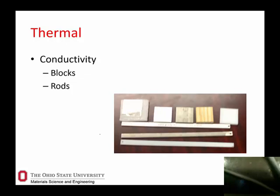Thermal conductivity is a really good one. If you've got a FLIR camera, hold one end of the sample at a given temperature and look at the temperature distribution. You can also put fingerprints on the different materials and see how long they persist with a FLIR camera, or put ice cubes on top of each material and see how long they last. Again, you can try to get real numbers or just rank things.